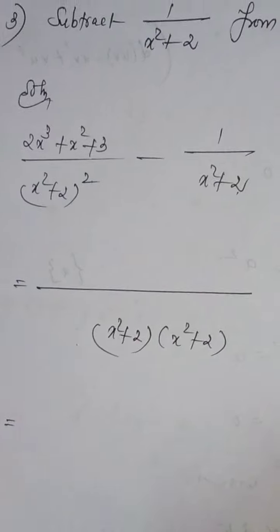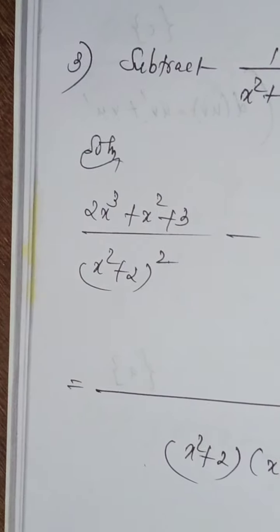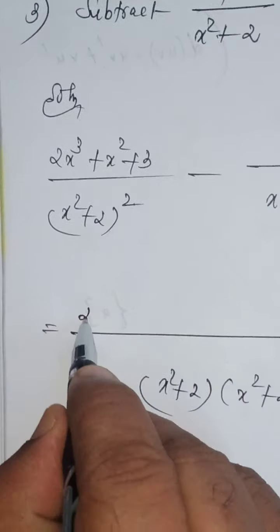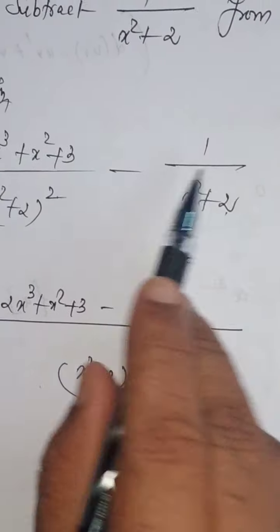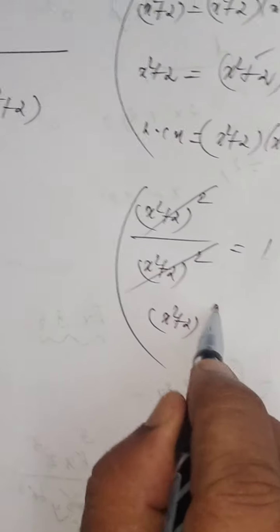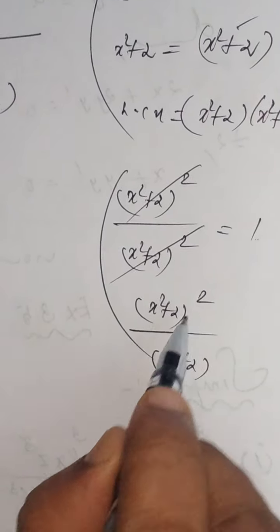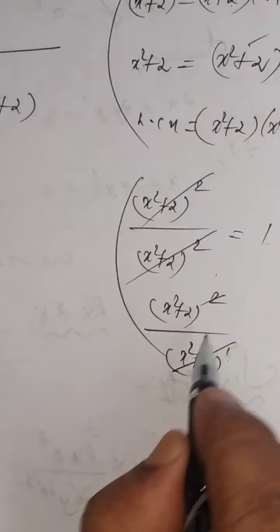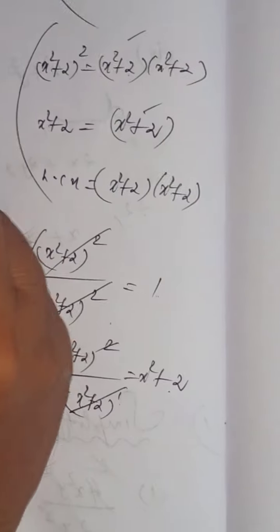That means (x squared plus 2) into (x squared plus 2), whole squared, divided by (x squared plus 2) whole squared — these two get cancelled, giving 1. This 1 should be multiplied with the numerator — 1 into anything is the same thing, so write 2x cubed plus x squared plus 3. Then divide this LCM by the denominator: (x squared plus 2) whole squared divided by (x squared plus 2). These two expressions cancel — power 2 minus power 1 equals 1 — so we get x squared plus 2. This x squared plus 2 should be multiplied with the numerator: 1 into (x squared plus 2) gives x squared plus 2.